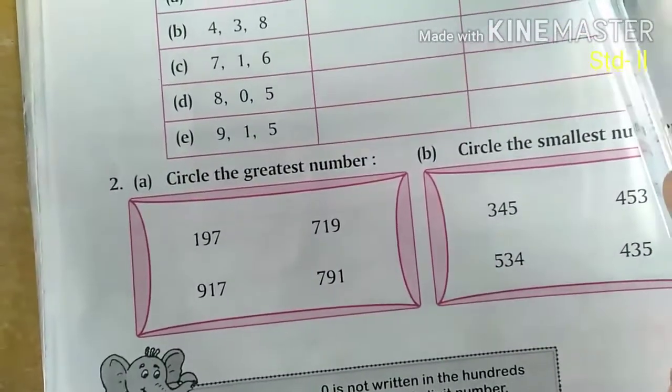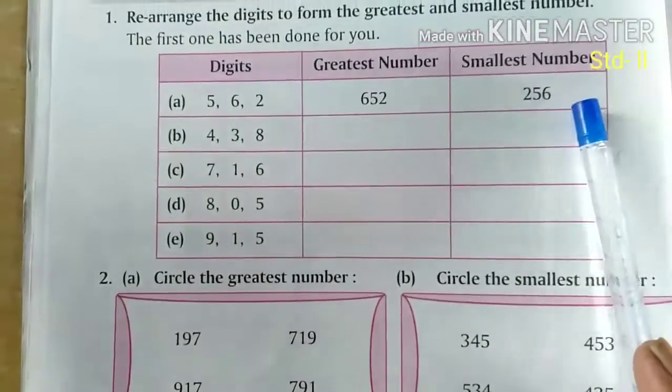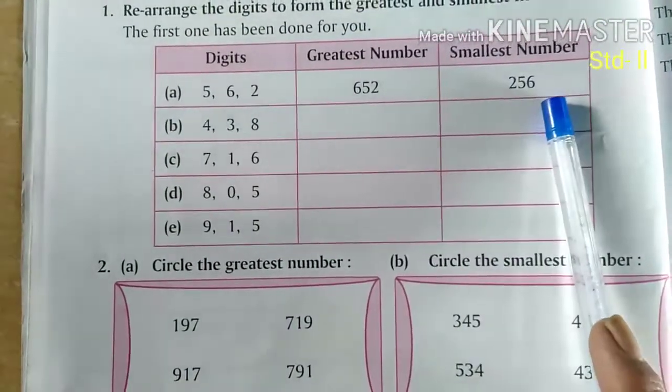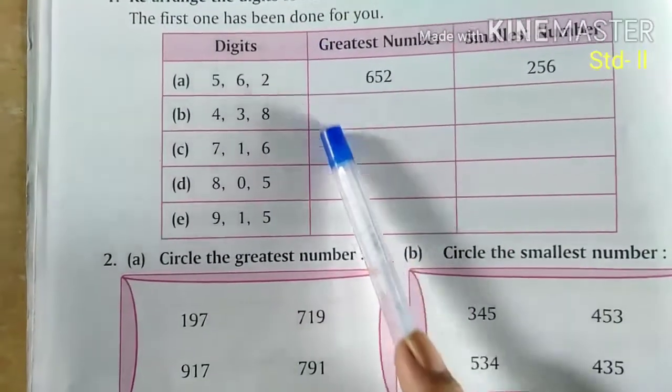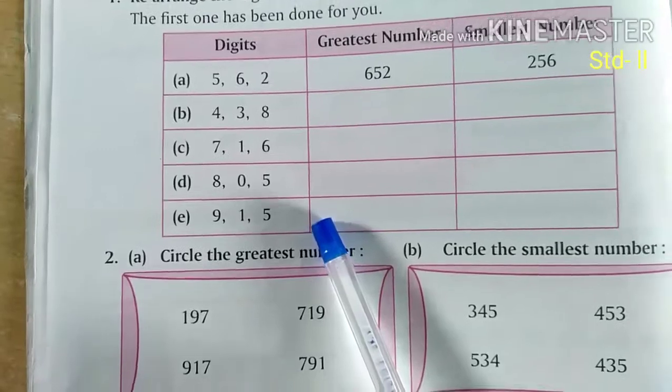smallest number. And to make the greatest number, do the opposite. 652. 652. In the same way, you will solve this table. Next,